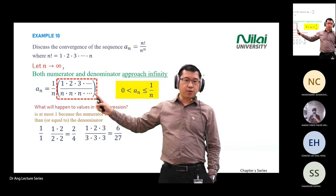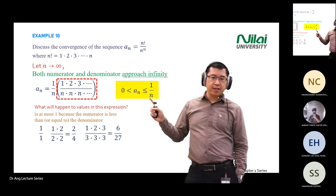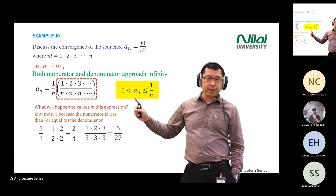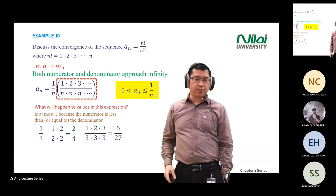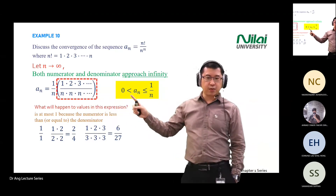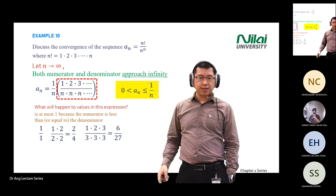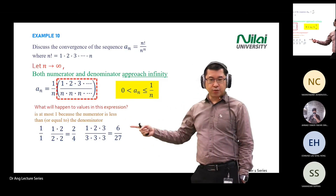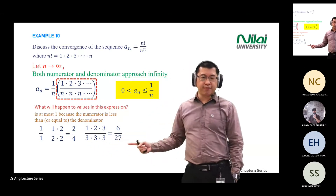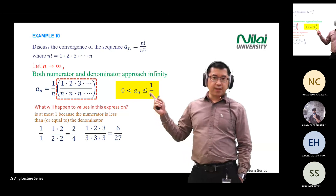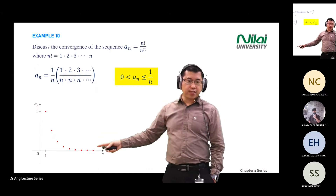You know this because the bracketed portion always approaches near to one. So the maximum value of a_n is one over n, but it cannot be zero — it will be bigger than zero. This is how you transfer the analysis into the inequality: 0 < a_n ≤ 1/n.